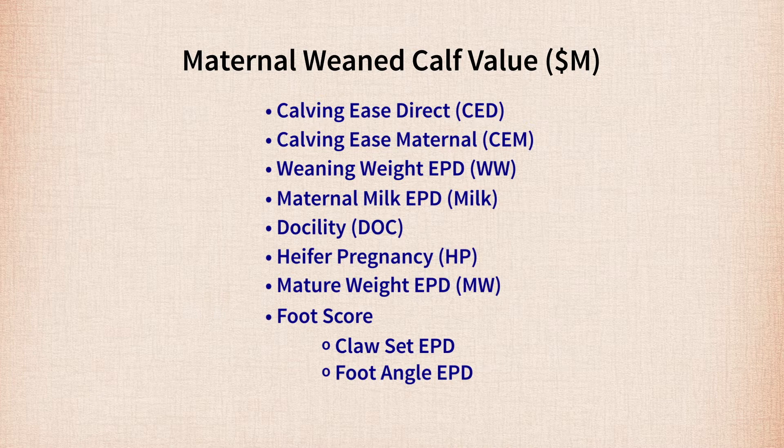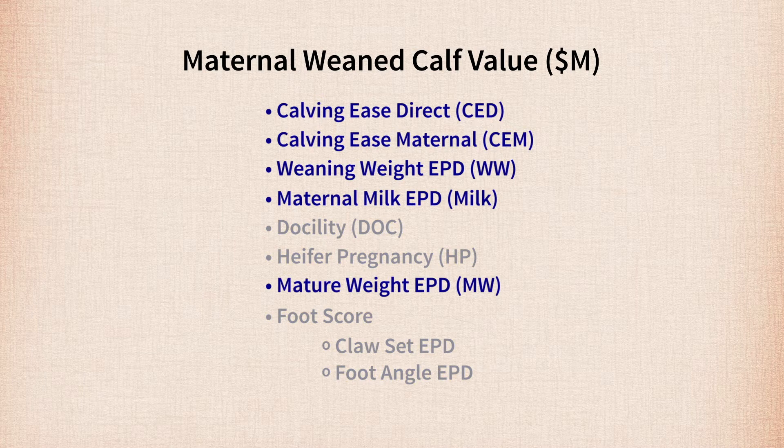A common question among Angus breeders is how do you account for the fact that some traits are more well defined with collected data than others. One of the ways we do that is by fitting them into the model, but because there's less spread in those EPDs, or fewer records driving those EPDs, they're going to have less overall influence on the index until we get more records into the database.